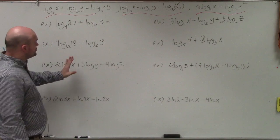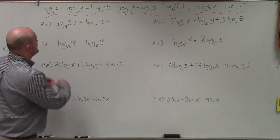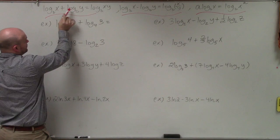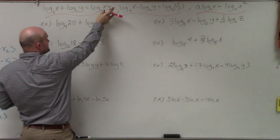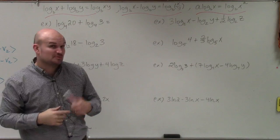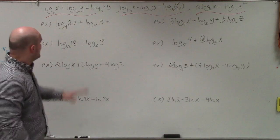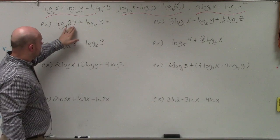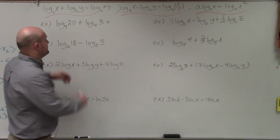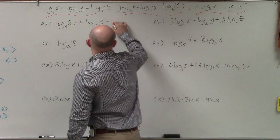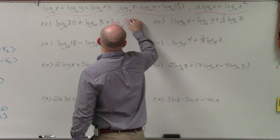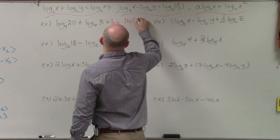To do that, by using the addition property, when I have two logarithms separated by addition, I can condense them into the product of the two values. So in this case, I have log base 4 of 20 plus log base 4 of 3. Therefore, that's going to equal log base 4 of 20 times 3.